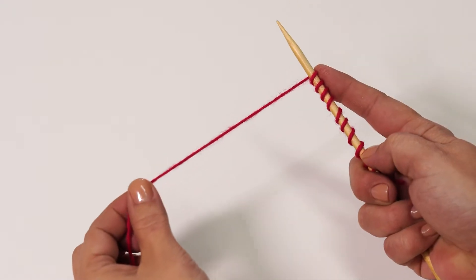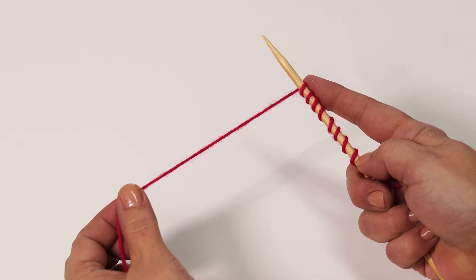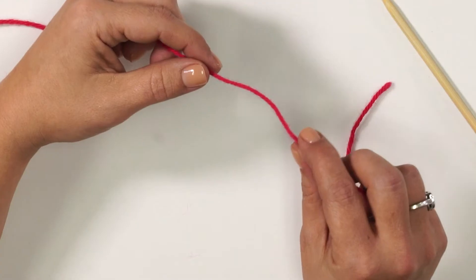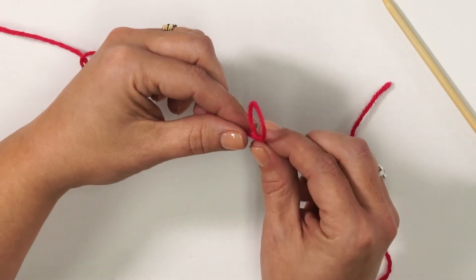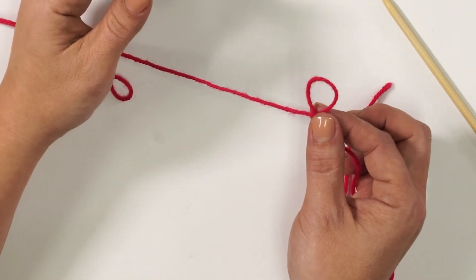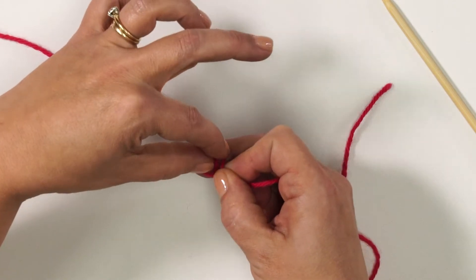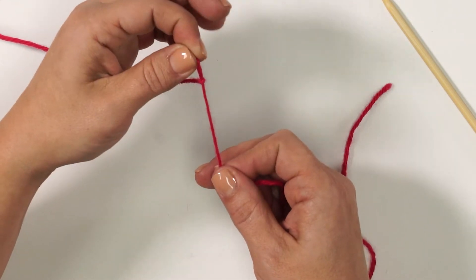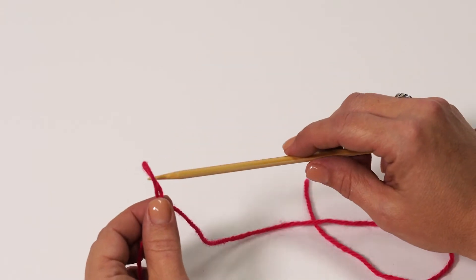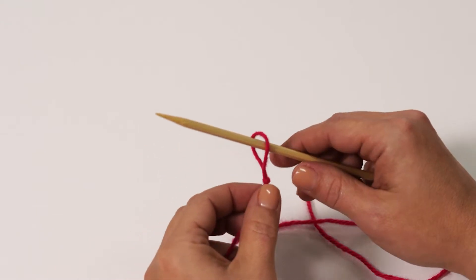Pinch and hold this spot. I'll make my slipknot here. To make a slipknot, twist the yarn into a loop. Sneak inside and pinch the working yarn. Pull it back through the loop. Place the slipknot on your needle, then snug it up.